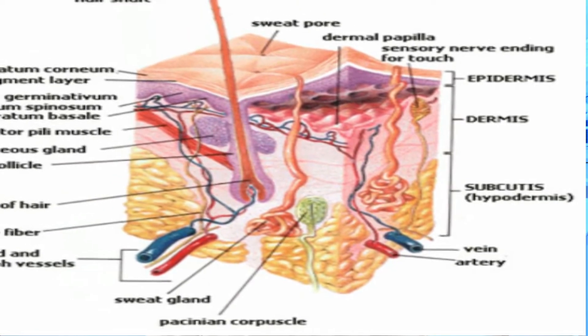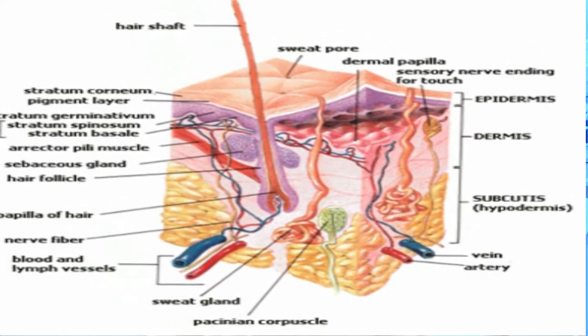Scabies infestation begins when the fertilized female mite burrows into the outer layers of the skin. An incubation period of four to six weeks follows, during which the new host may have no symptoms and may be unaware of their infestation. For people who have had scabies infestations before, the symptoms usually present much sooner, within one to four days of exposure, as these people have already developed hypersensitivity to the mite.